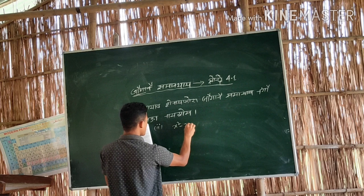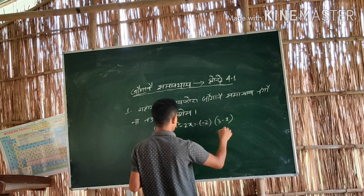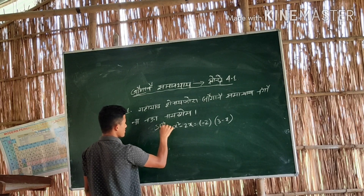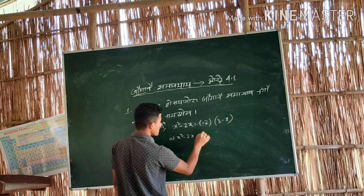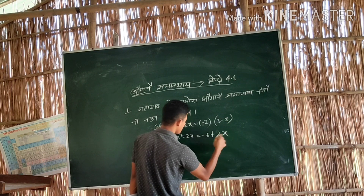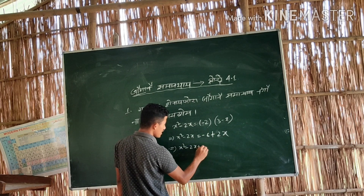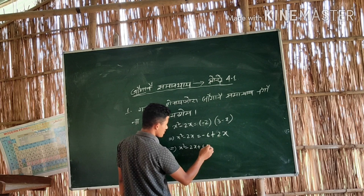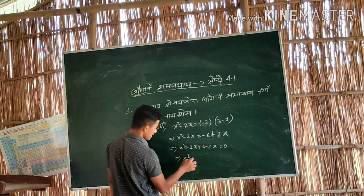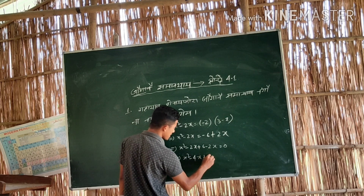x squared minus 2x is equal to minus 2 times 3 minus x. So: x squared minus 2x, minus x, and minus 6, minus minus plus 2 into x — twice x. x squared minus 2x minus 6 plus 6, plus 2x minus 2x, equal to x squared, minus minus, again minus, minus minus plus 2 into 4, giving 4x plus 6 equal to zero.